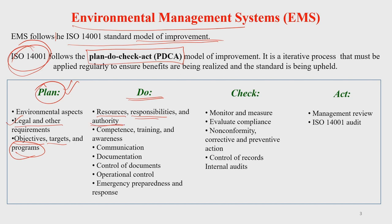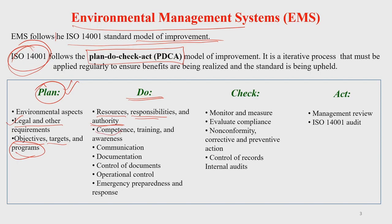In the Do step, all resources at your disposal should be utilized responsibly — responsible utilization of natural resources is a key aspect of efficient natural resource management. Authority comes with certain responsibility, so it is the duty of government departments or organizations owning a mining area to implement the aspects of EMS. This includes competence, training, awareness, communication, documentation, periodical review reports, control of documents, operational control, and emergency preparedness and response.